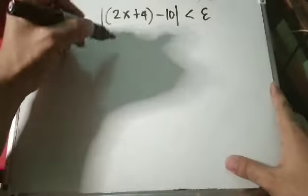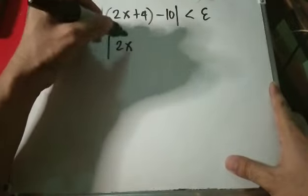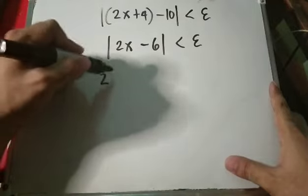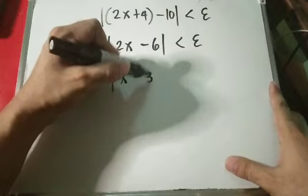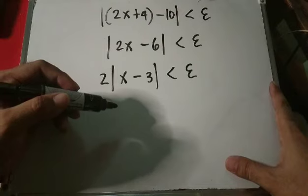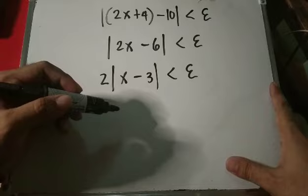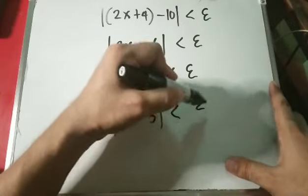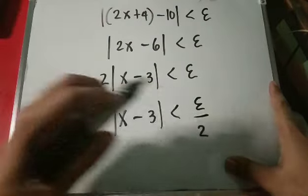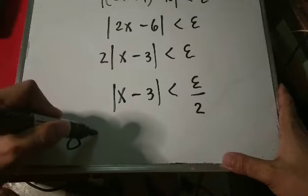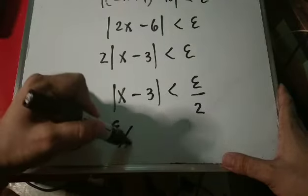Play around until you find the formula that might work. Start with the absolute value of 2x plus 4 minus 10 is less than epsilon. Simplify: we have the absolute value of 2x minus 6 is less than epsilon. Factor out 2: absolute value of 2 times x minus 3 is less than epsilon. Now move 2 across — multiply both sides by one half — so we have the absolute value of x minus 3 is less than epsilon over 2.